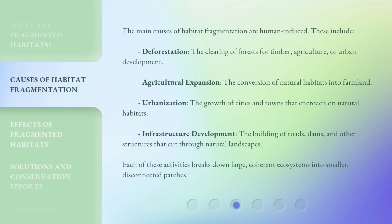The main causes of habitat fragmentation are human-induced. These include deforestation — the clearing of forests for timber, agriculture, or urban development. Agricultural expansion — the conversion of natural habitats into farmland. Urbanization — the growth of cities and towns that encroach on natural habitats. Infrastructure development — the building of roads, dams, and other structures that cut through natural landscapes. Each of these activities breaks down large, coherent ecosystems into smaller, disconnected patches.